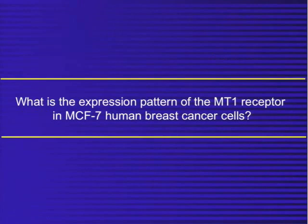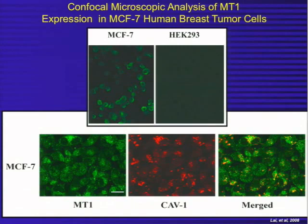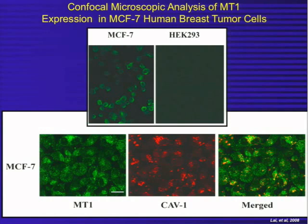So what's the expression pattern of the MT1 receptor in human breast cancer cells? This is some work we just recently published. Using the Abcam antibody to the MT1 receptor, we demonstrated that the melatonin receptor, particularly the MT1, is located in the cytoplasm of the cell, particularly associated with the cell membrane, in human breast cancer cells, and in human embryonic cells, which do not express the MT1 receptor.